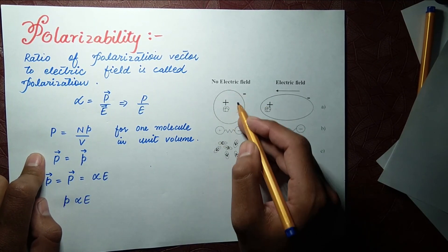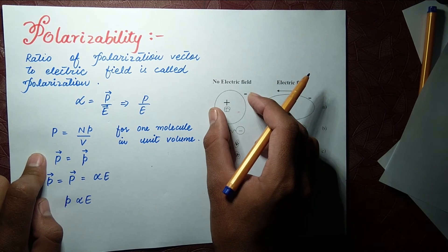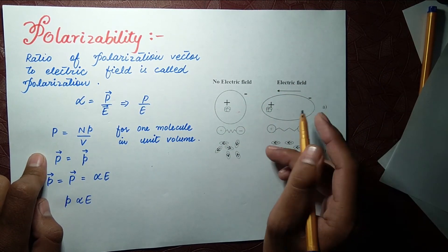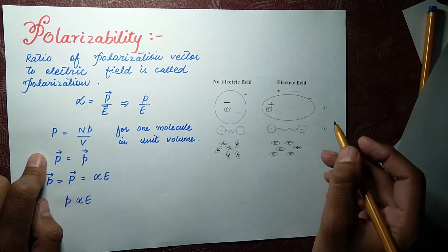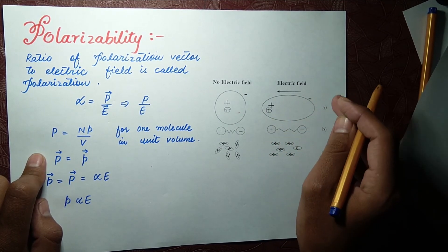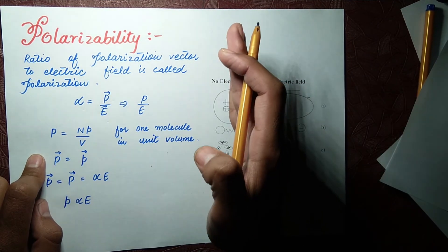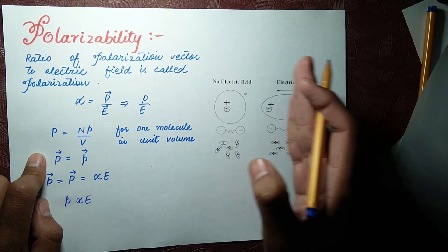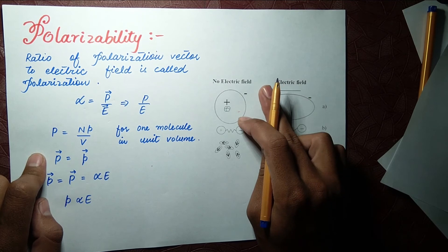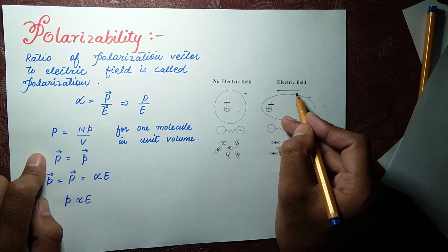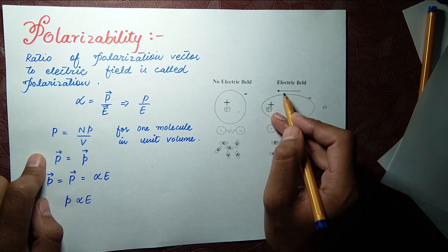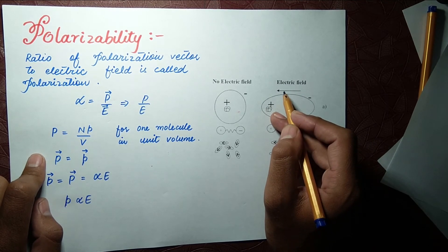When there is no electric field, we have a constant neutral atom. When we apply the electric field, we get a partial positive and a partial negative charge. The positive electric field is on one side and the negative on the other. The direction of the electric field is from positive to negative, and the direction of the dipole moment is from negative to positive.